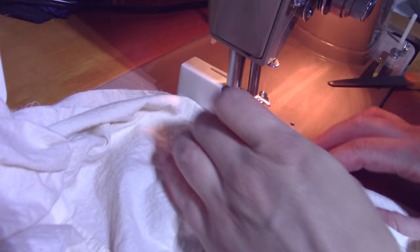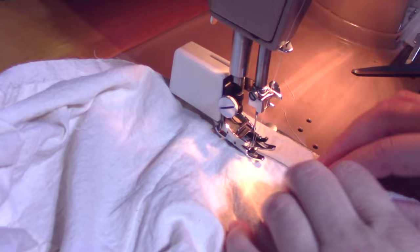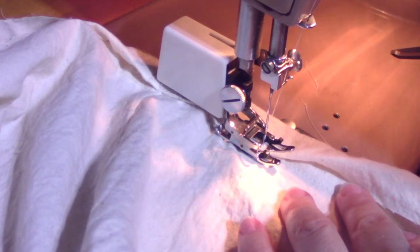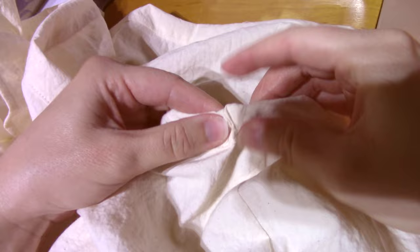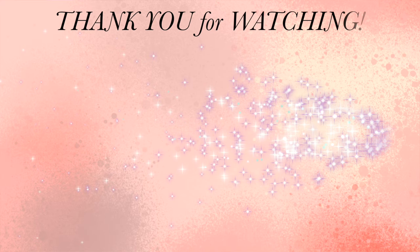Then finally, you can attach your waistband using your preferred method. I would recommend using a walking foot for this, as that can help moderate the tension and prevent the waistband from becoming wavy as you sew it. Then just pop in your elastic or drawstring, whatever the case may be, and you're done.